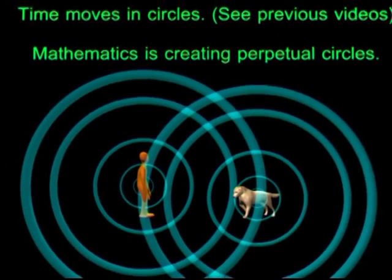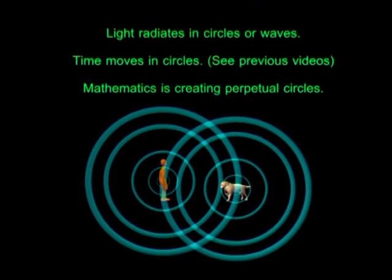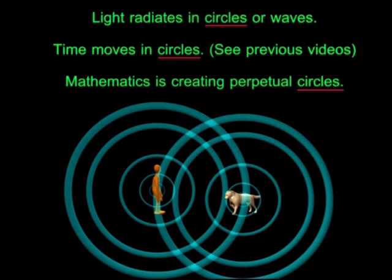Light radiates in a circle. Time moves in a circle. And as I have shown, mathematics is creating perpetual cycles of 60 numbers. The three are all behaving the same or are in fact the same thing.